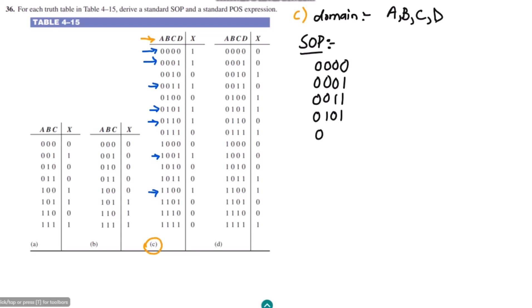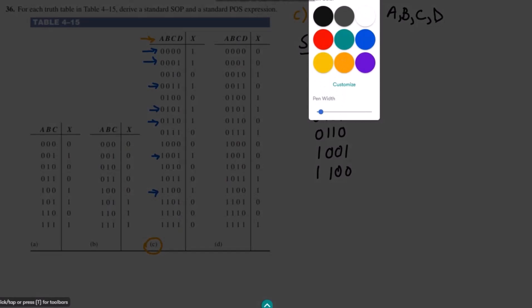Continuing: zero one zero one, zero one one zero, and the term one zero zero one, and the last term is one one zero zero. So these are the terms for which we have to find the sum of products. For each product term, the variables that are zero must be complemented so that the product gives one.